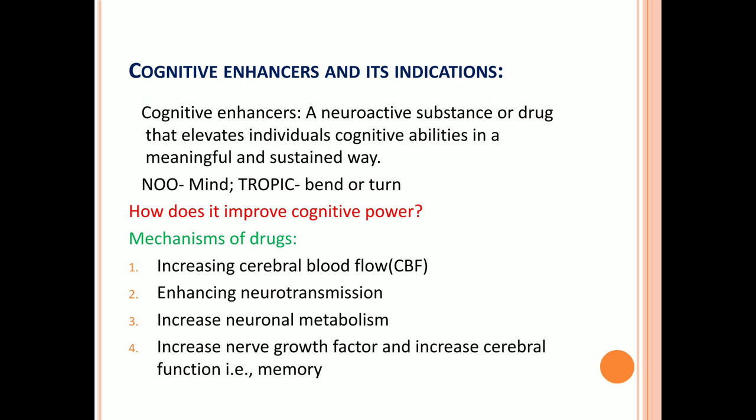The third mechanism is increasing neuronal metabolism. If proper neurotransmitter functioning is occurring, then the metabolism of those neurons should also be working correctly, which will help address memory loss. The fourth mechanism is increasing nerve growth factor and cerebral functions — the factors that boost memory should be increased by nootropics.